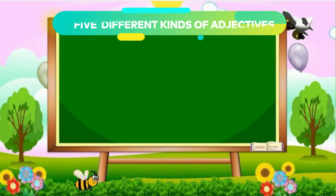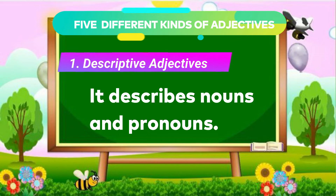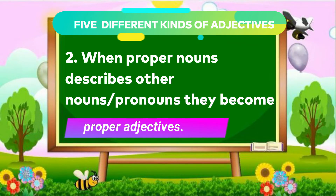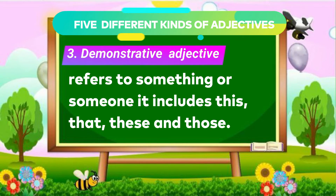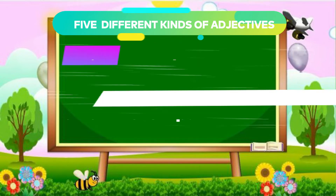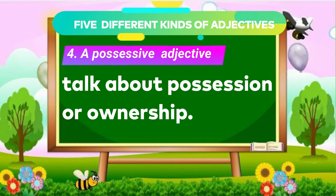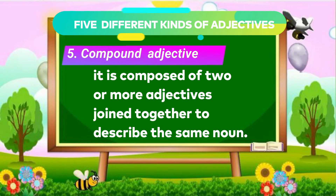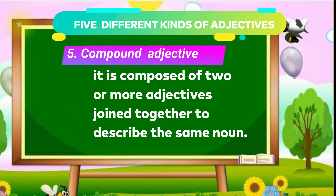There are five different kinds of adjectives. First, descriptive adjectives — it describes nouns and pronouns. Second, when proper nouns describe other nouns and pronouns, they become proper adjectives. Third, demonstrative adjective, which refers to something or someone. It includes this, that, these, and those. Fourth, possessive adjectives, which talk about possession or ownership. Fifth, compound adjective — it is composed of two or more adjectives joined together to describe the same noun.